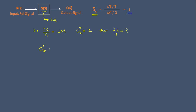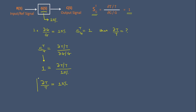Substituting the values: S_T^G equals ∂T/T divided by ∂G/G. The sensitivity of an open loop system is one, and the change in forward gain element is 10 percent. Therefore, the change in the overall transfer function is also 10 percent. This is a disadvantage of the open loop system.